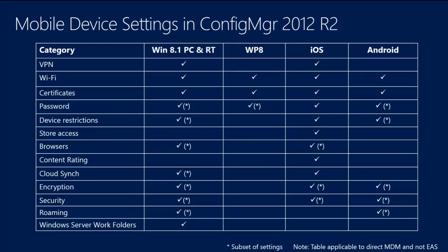Password support is a no-brainer. We have device restrictions around things like cameras, store access for iOS, browser settings management, content rating for iOS, cloud sync management for Windows 8.1 PC and RT devices as well as iOS, encryption, security, and roaming. It comes down to platform support determining whether a particular setting can be configured. And last but not least, work folders - you can configure those settings through Configuration Manager just as you would through Group Policy.